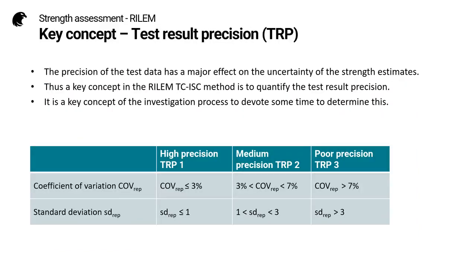The second new key concept is called test result precision, and it's something that the standards don't deal with at all. The precision of the test data has a major effect on the uncertainty of the strength estimates. The RILEM method defines a procedure to check the test result precision based on carrying out a number of tests at the same test location, and we have to calculate the coefficient of variation and the standard deviation. It requires very little additional effort and brings a lot of value.